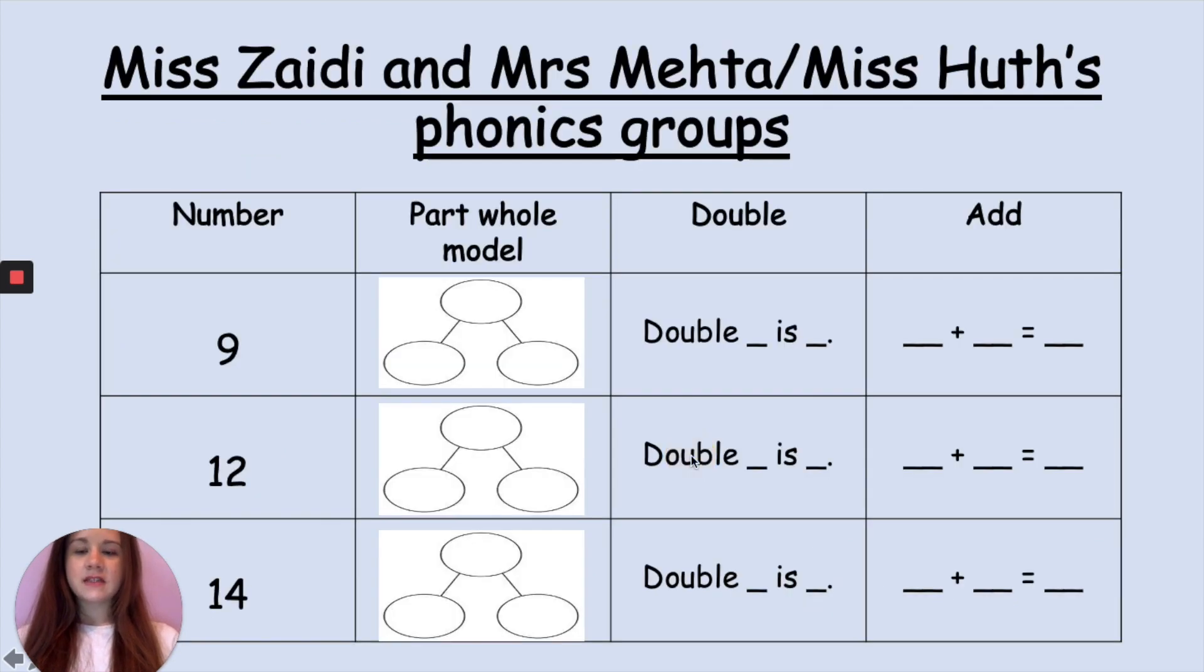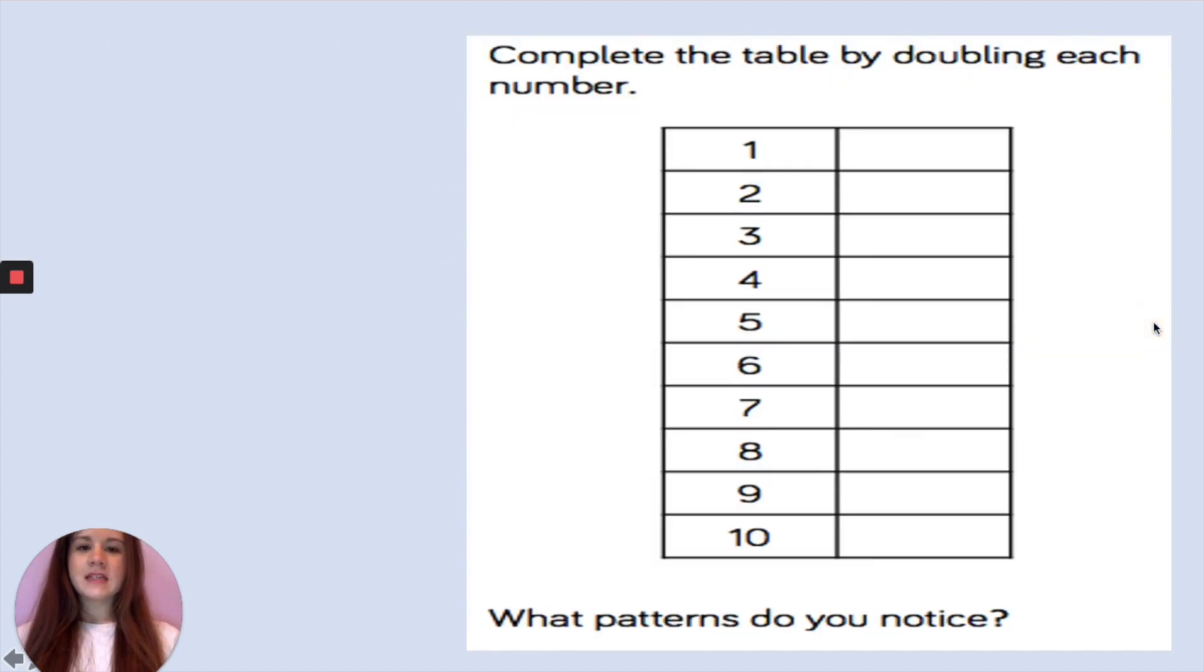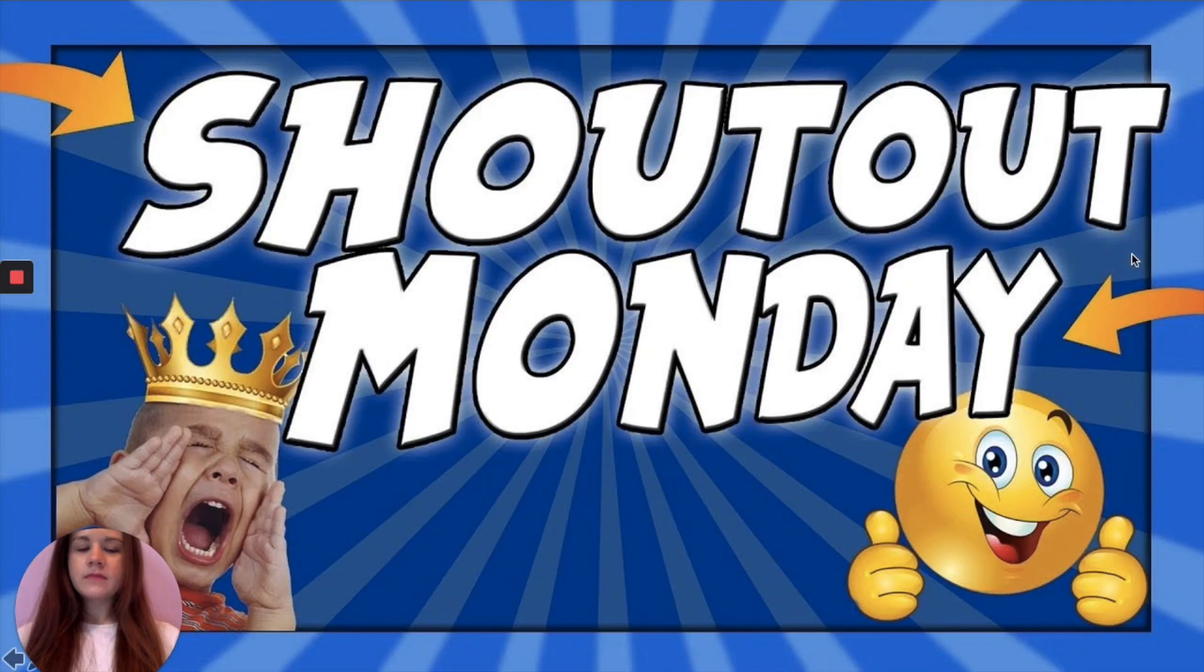Here is your activity if you are in Miss Zady and Mrs. Metta or Miss Huth's phonics groups. Here are your numbers: complete your part-whole models, your double sentence, and your number sentence. This is the problem solving activity: complete the table by doubling each number and see if you notice a pattern with your answers.